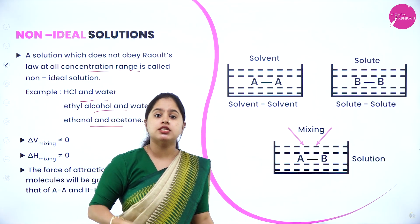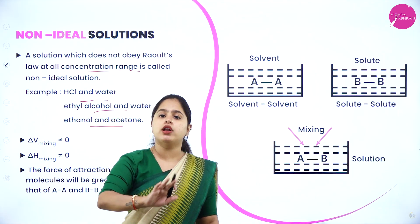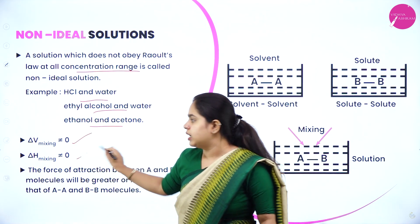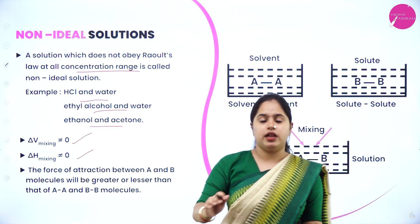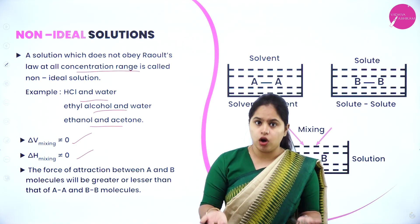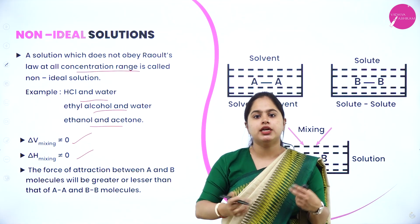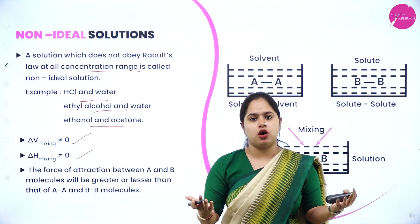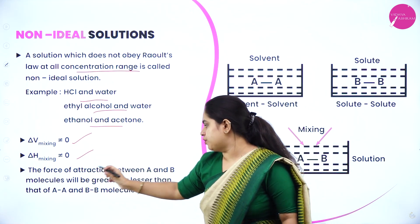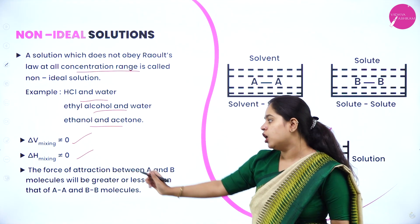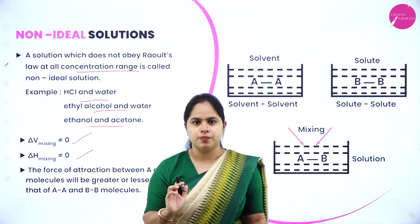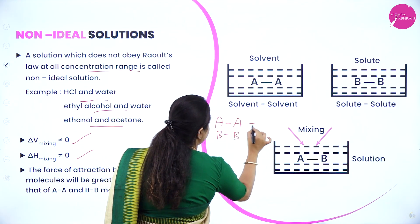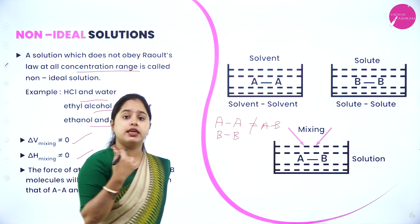In non-ideal solutions, the AA and BB interactions are not equal to the AB interactions — they will be either greater than or lesser than the AB interactions. Also, ΔmixV and ΔmixH are not equal to zero: there is a volume change and an enthalpy change associated with mixing the solute and solvent to form the solution.